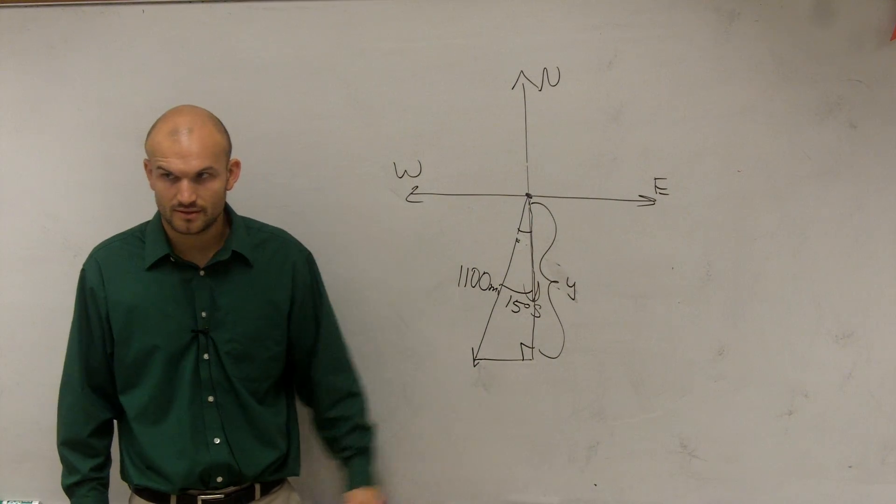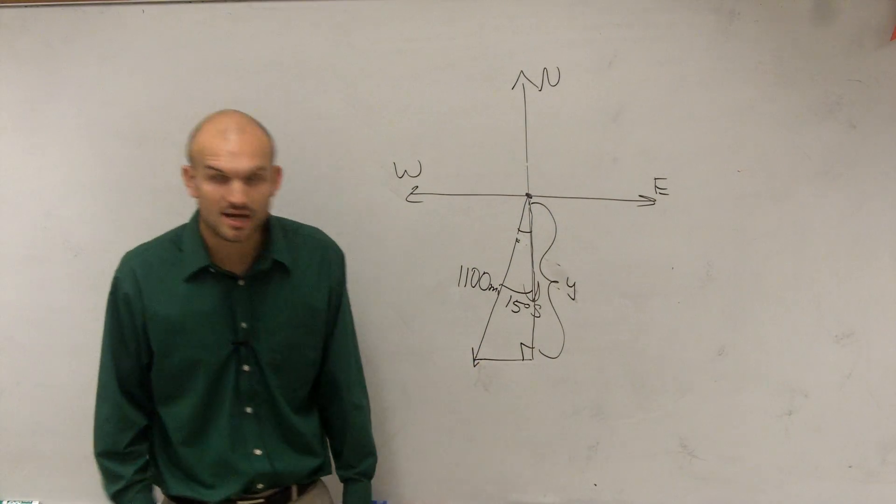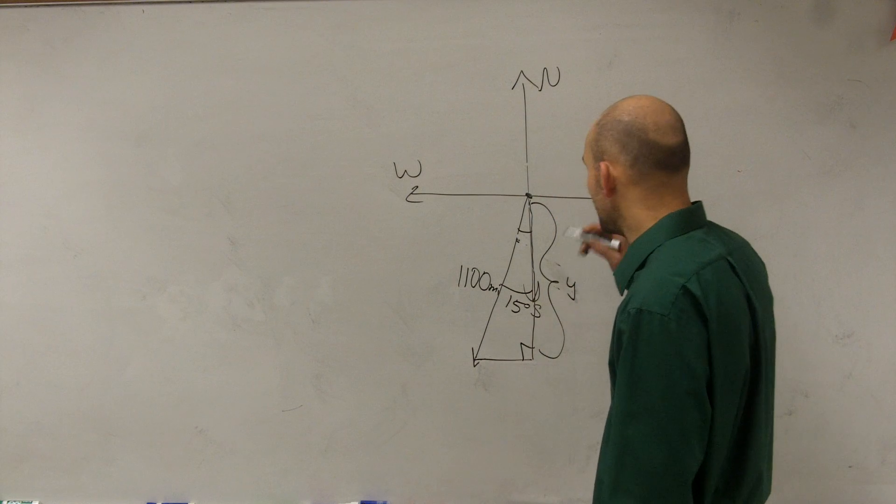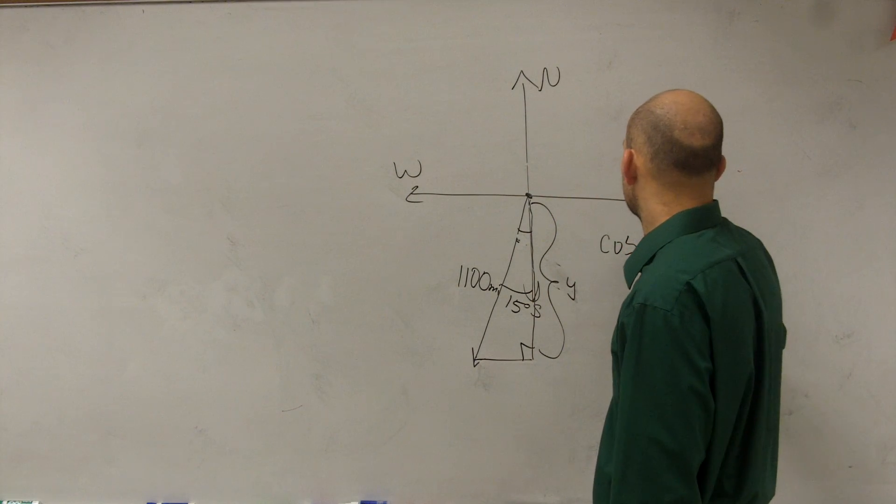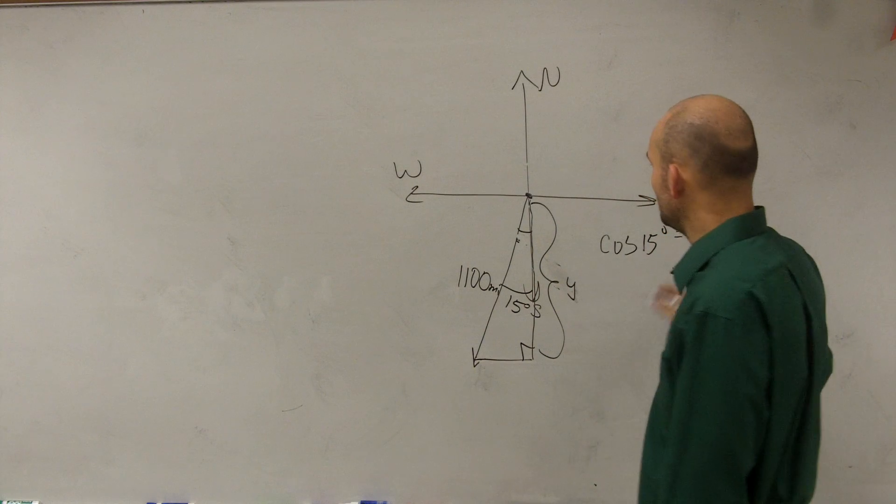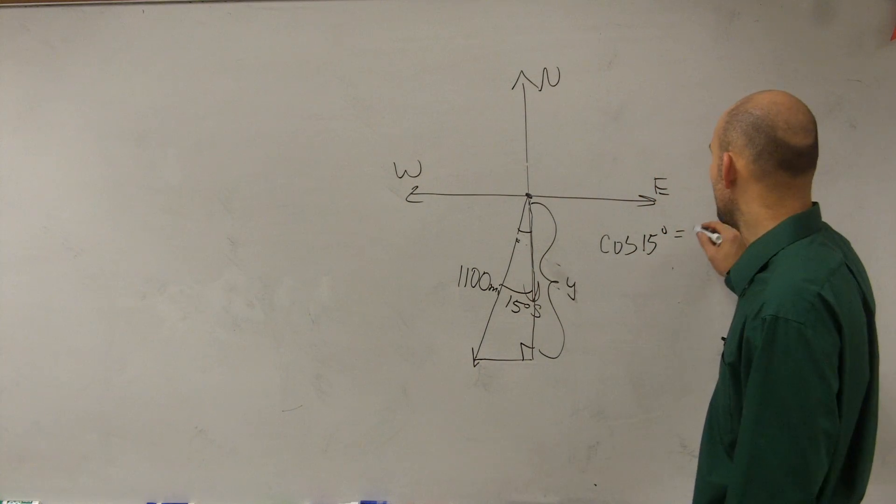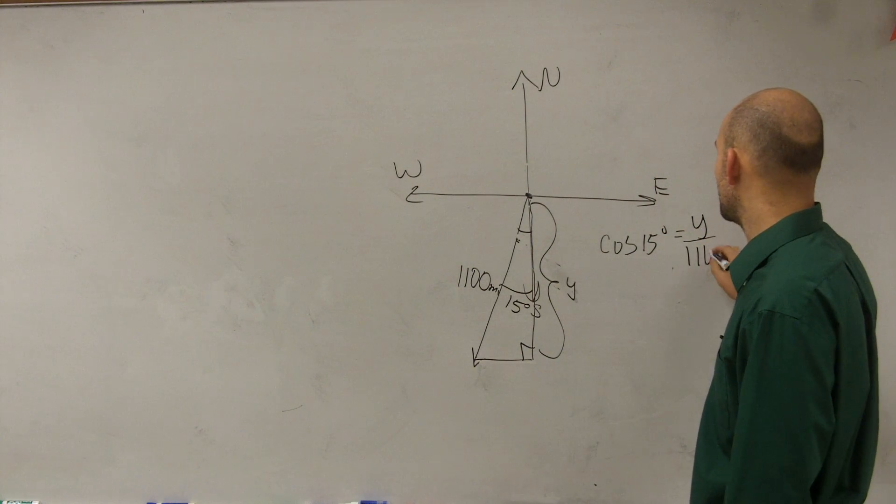So therefore, since we have the hypotenuse and adjacent, you can say you're going to do cosine of 15 degrees equals adjacent over hypotenuse, Y over 1,100.